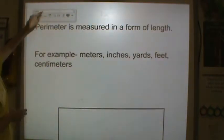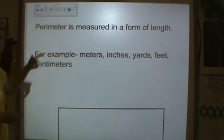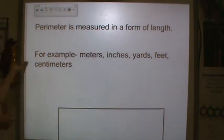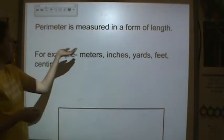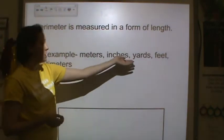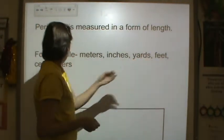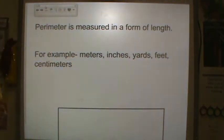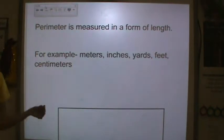Perimeter is measured in the form of length — you need to be writing this down, these are your notes. For example, perimeter can be measured in meters, inches, yards, feet, centimeters. Those are all measurements of length.